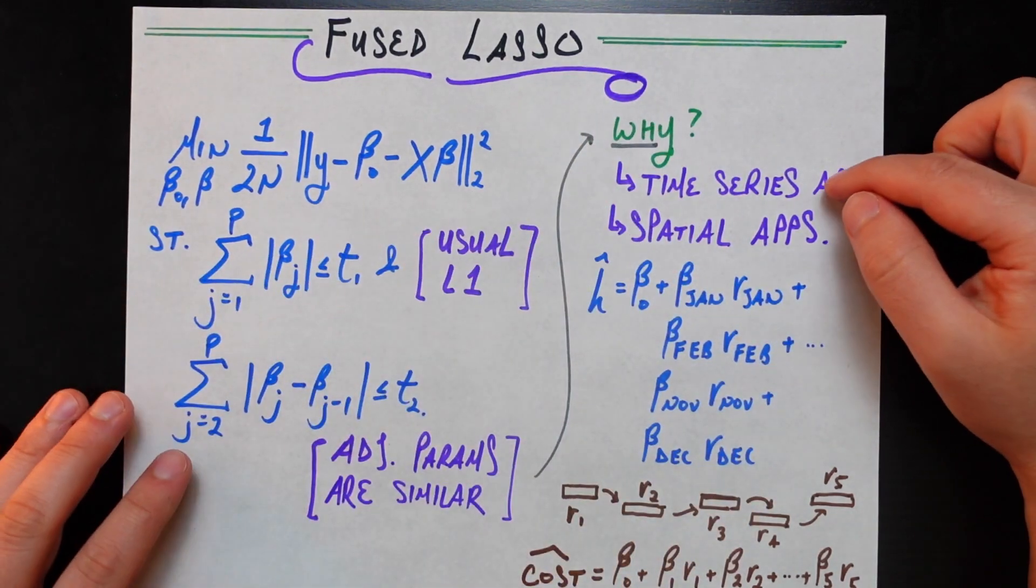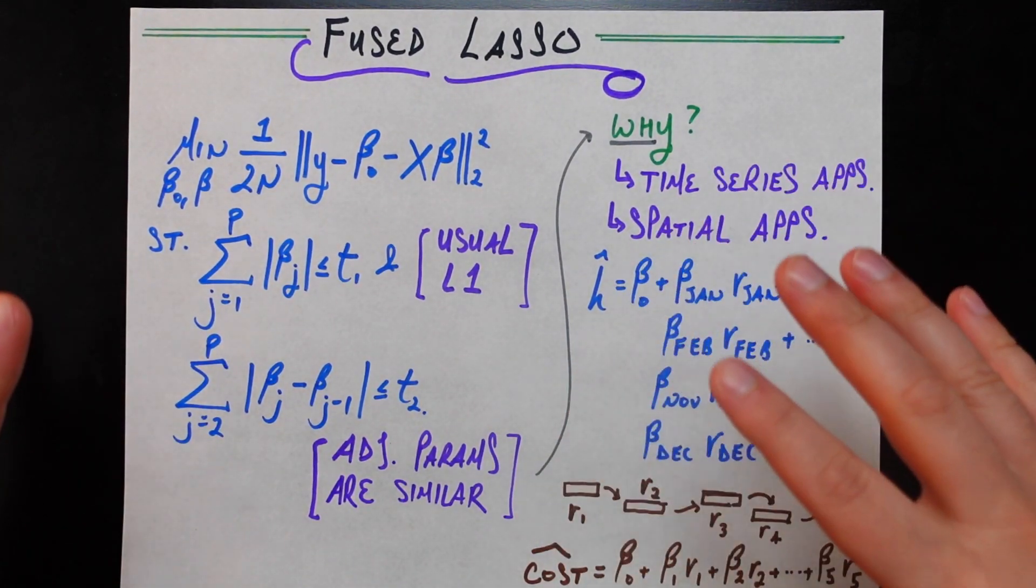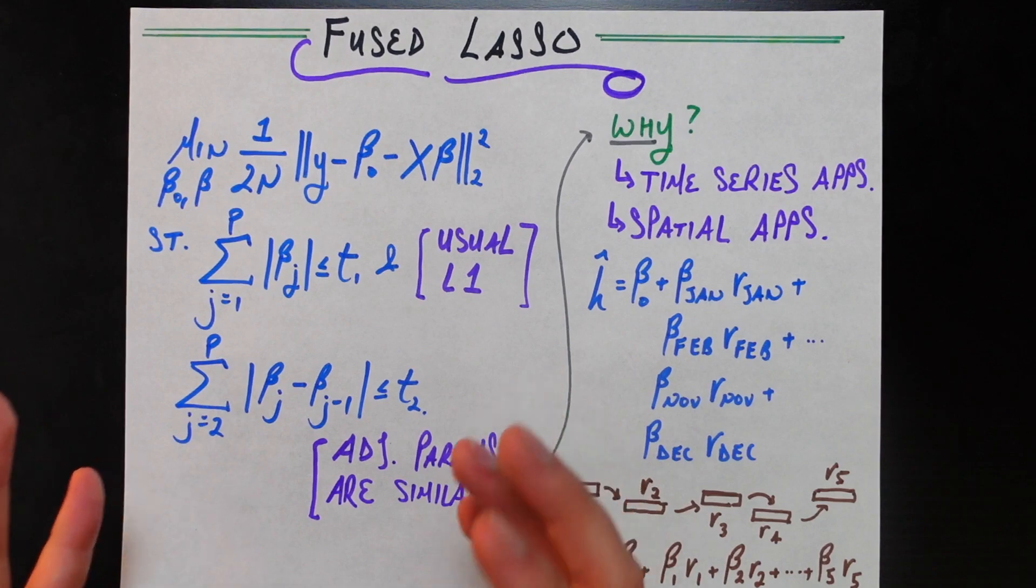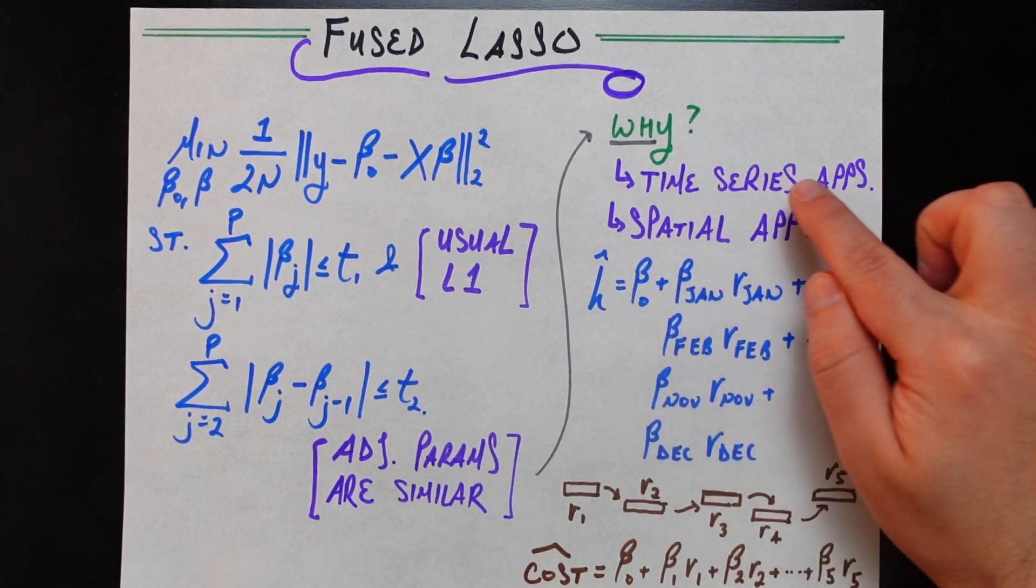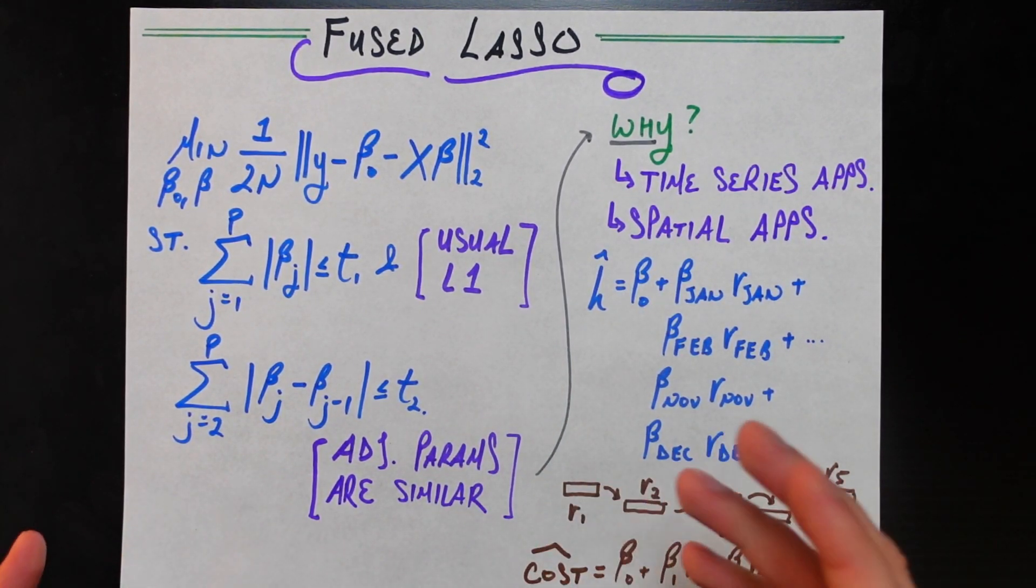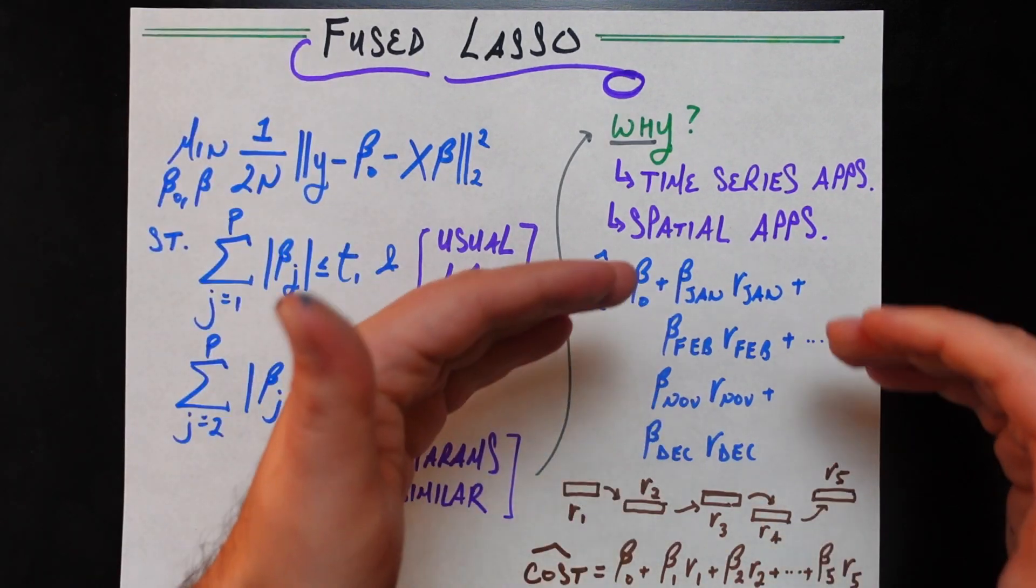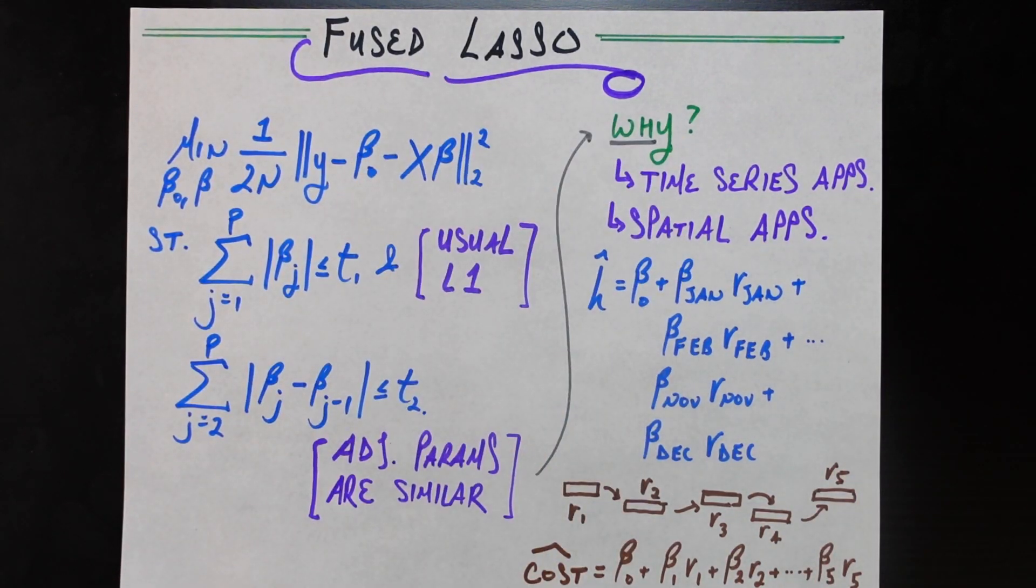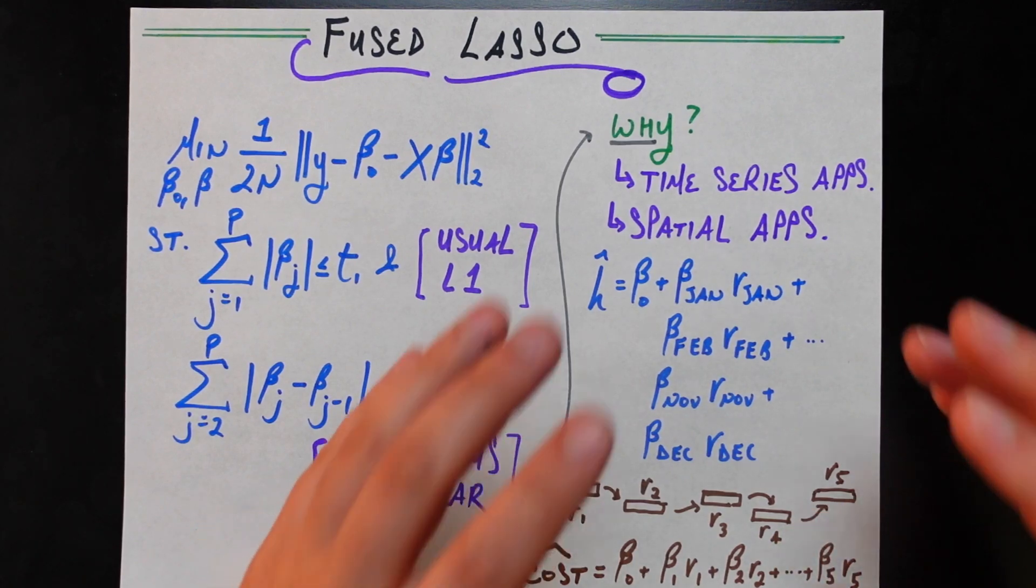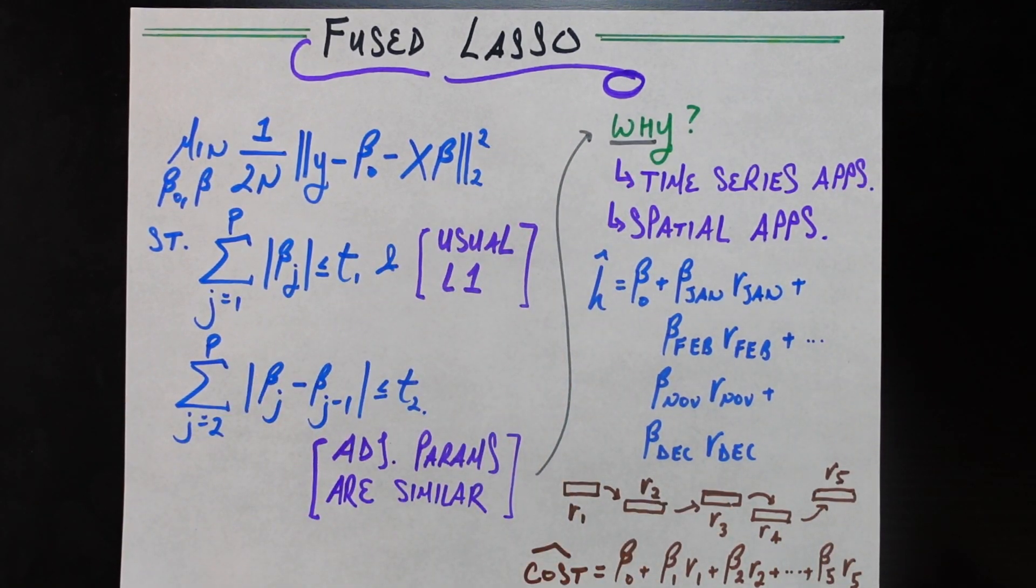Now, why might we want to do this? What sorts of problems, what sorts of applications does this make sense to do? Well, time series applications are going to be a really important one. And so, I have two examples down here. The first one is an example of the time series applications where this is useful. And the other one is the spatial statistical applications where this is useful.